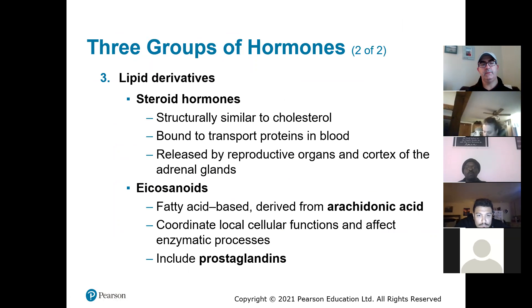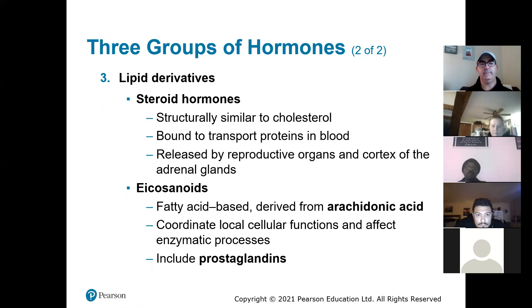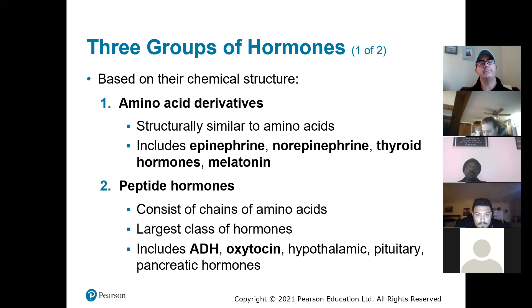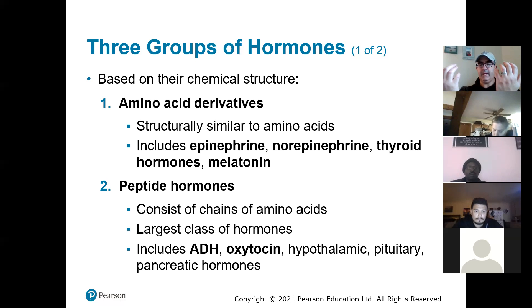Hormones are grouped into two main categories. They can be made of amino acids — proteins — or made of lipids. Those are really the two big categories. The textbook distinguishes amino acid derivatives from peptide hormones, but peptide hormones are just chains of amino acids, so they're all proteins. These chemical messages are either made of protein or lipids.